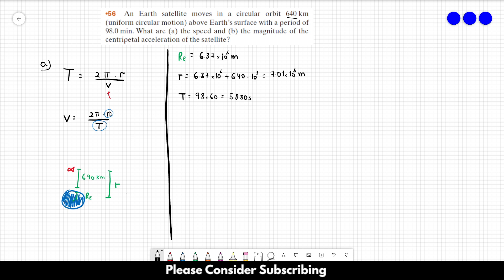So now we just need to replace in this equation, and that's it. The speed is equal to 2 times pi times the radius, 7.01 times 10 to the 6 over 5,880. So this gives us a speed of 7.49 times 10 cubed meters per second. So that's the answer of letter A.